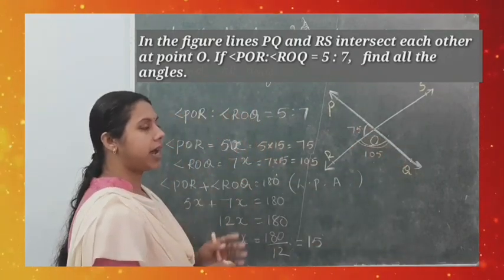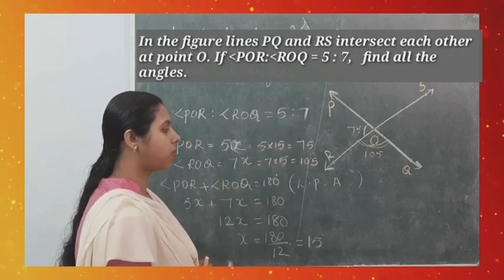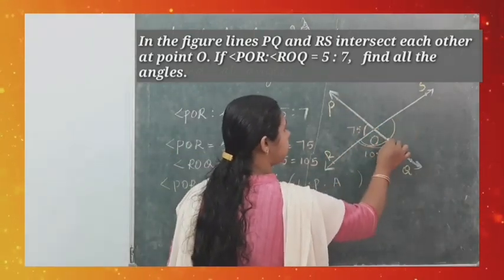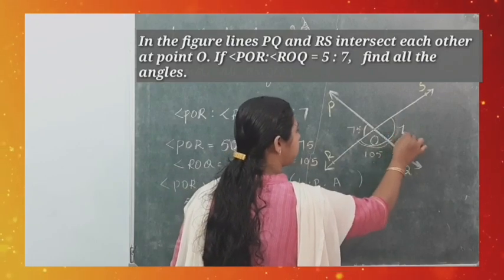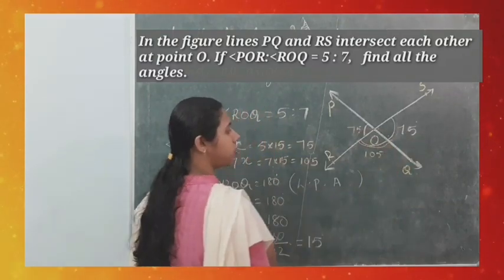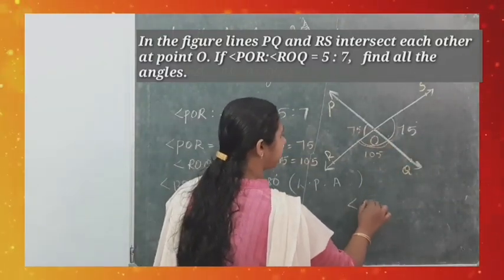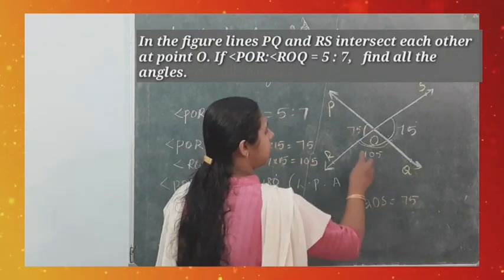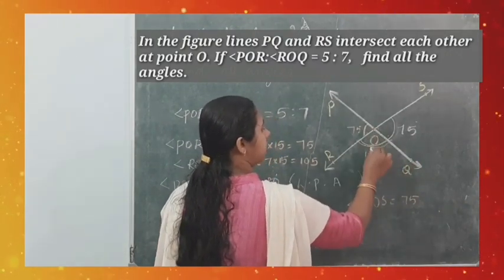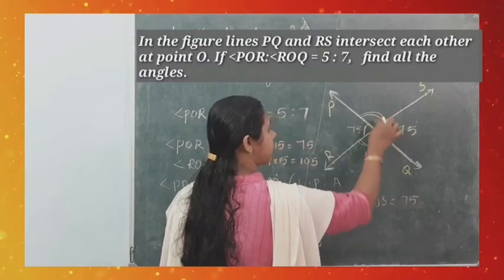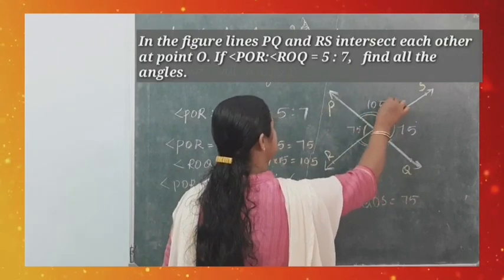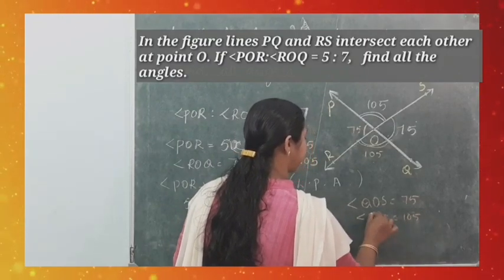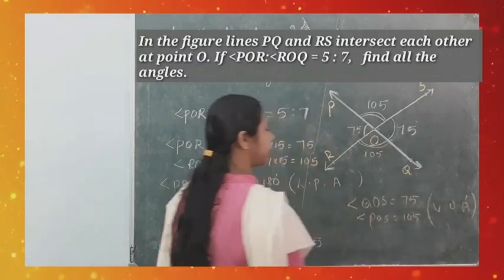Since the two lines intersect, vertically opposite angles are equal. So angle QOS = angle POR = 75° (vertically opposite). And angle POS = angle ROQ = 105° (vertically opposite). When writing such problems, write each step with the reason in brackets — e.g., 'linear pair axiom' or 'vertically opposite angles are equal.'